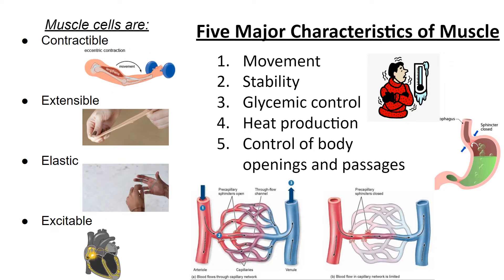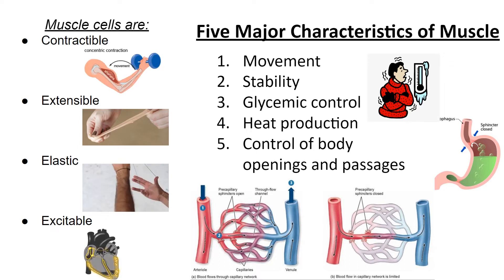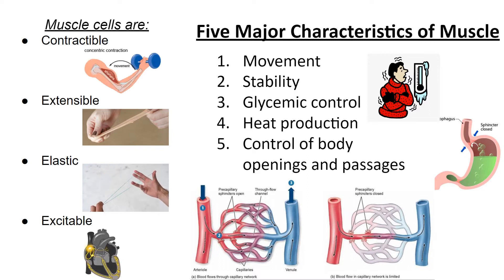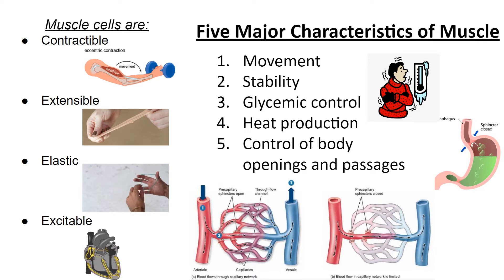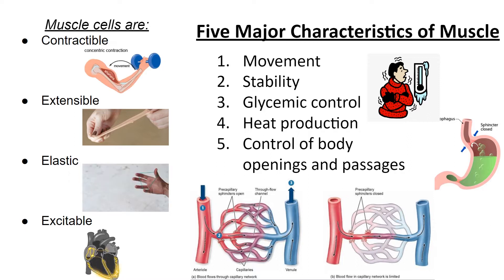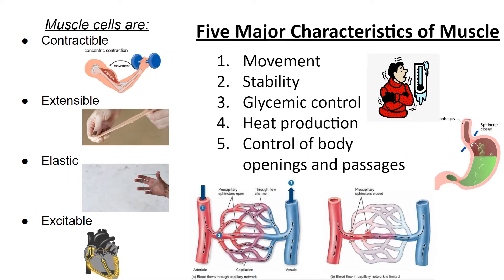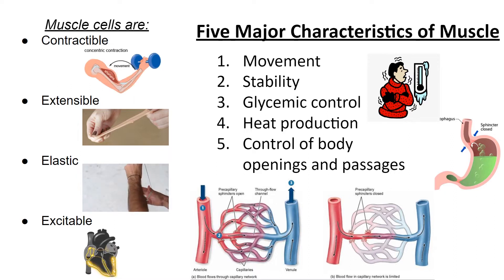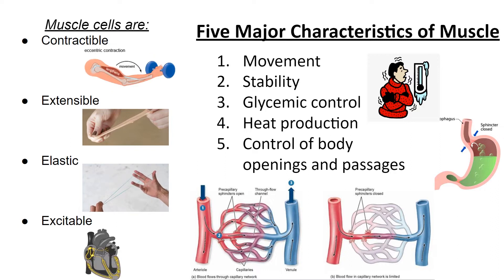The last and probably most important property is the cell's ability to get excited. This means that they have a resting state and an excited state. For our muscles, the resting state is when muscles are relaxed, and the excited state is when our nervous system signals to the muscle to shorten and contract. All of these features enable muscle tissue to perform five major functions.